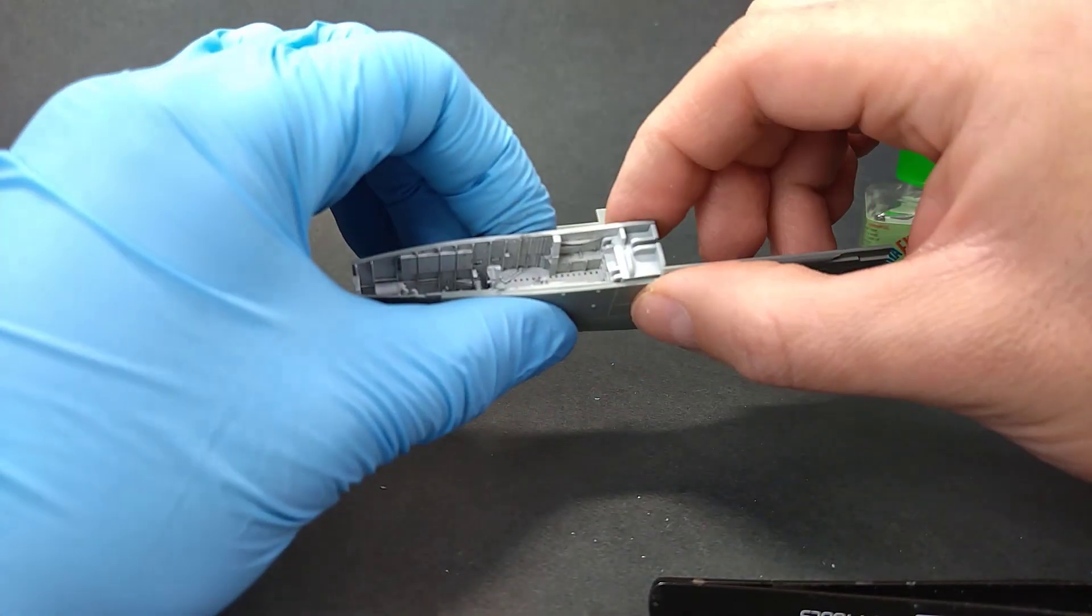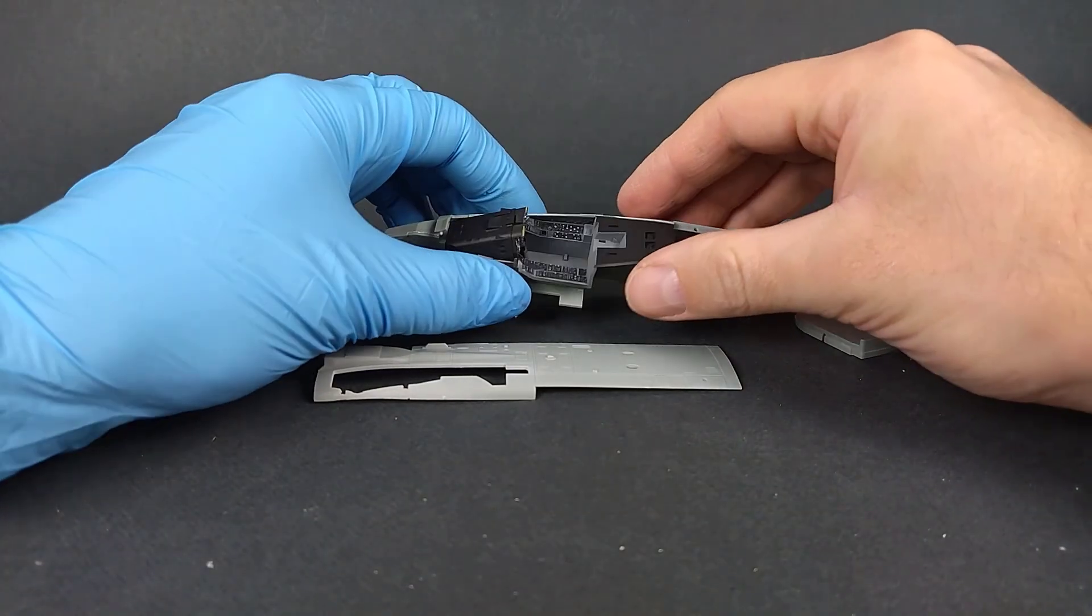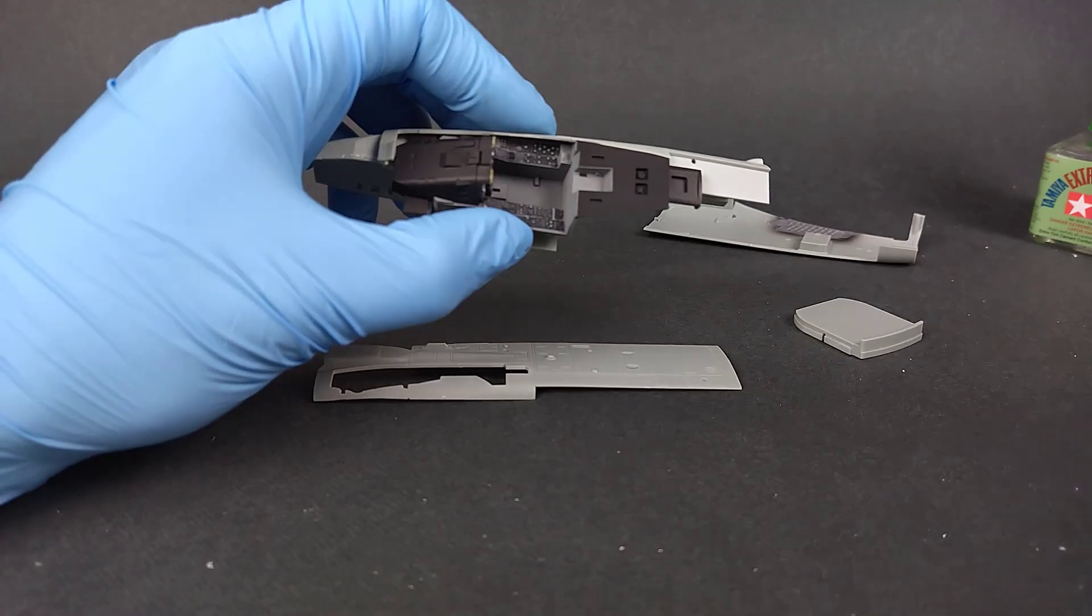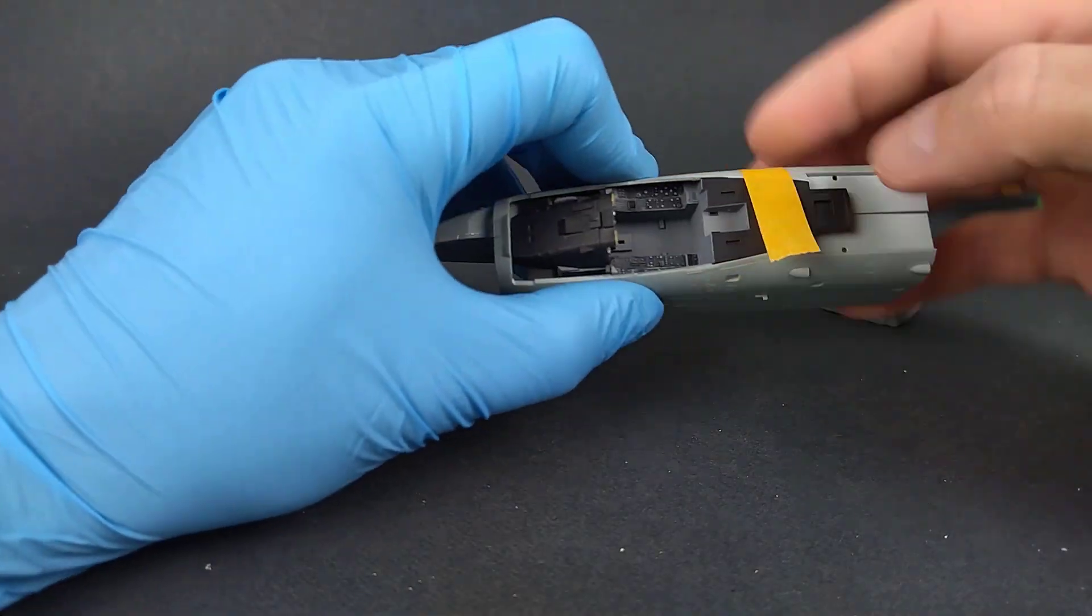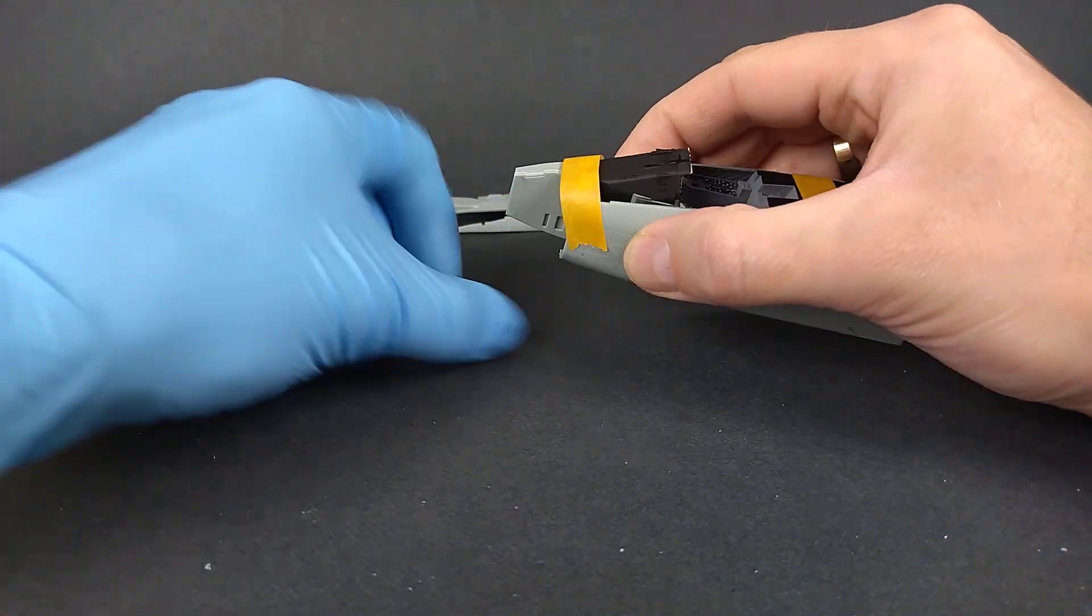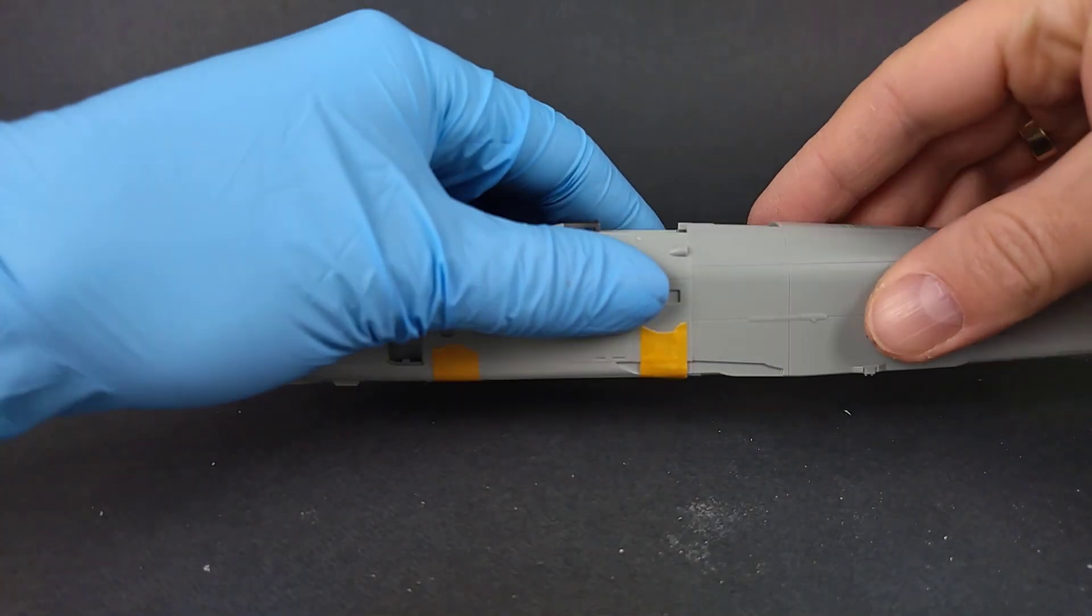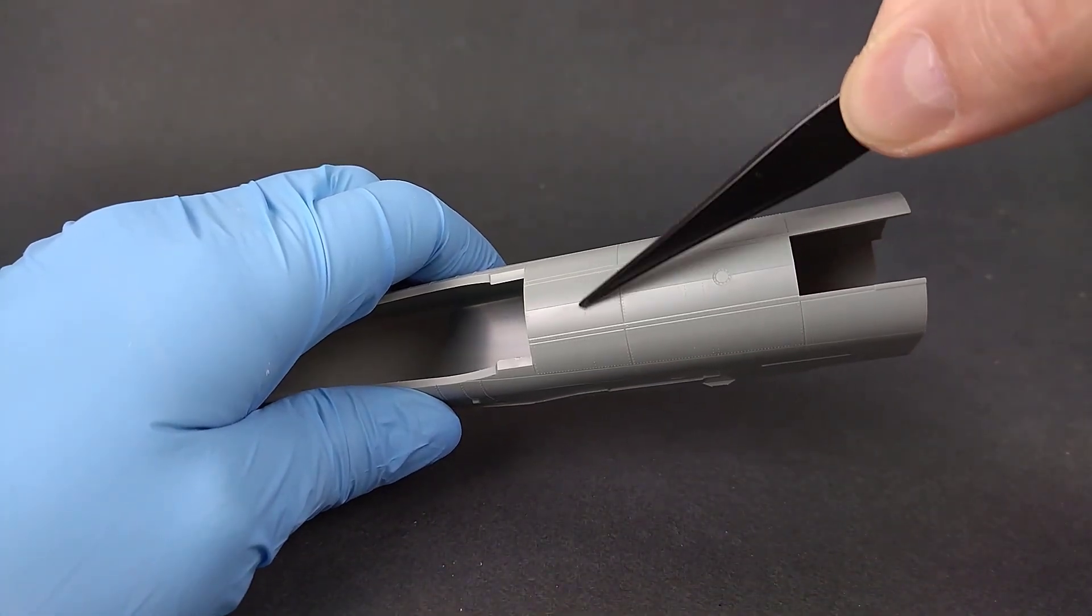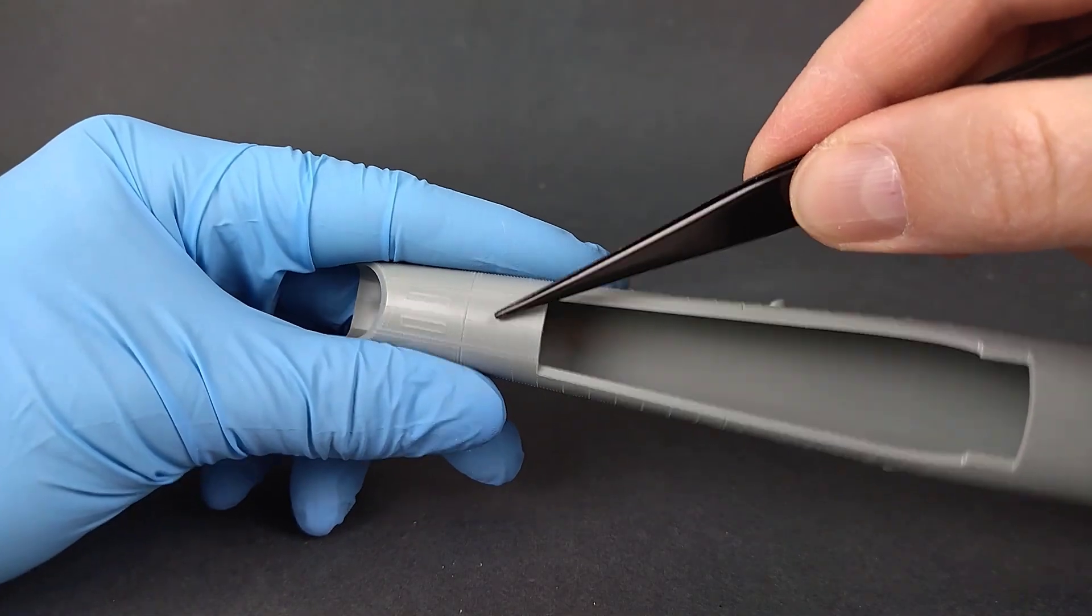The nose section is quite complex, so I made sure all fit good before I glue it. This one piece mold looks great, however there are seam lines I have to remove, which turns to be a delicate job due to the raised rivets and details all around.